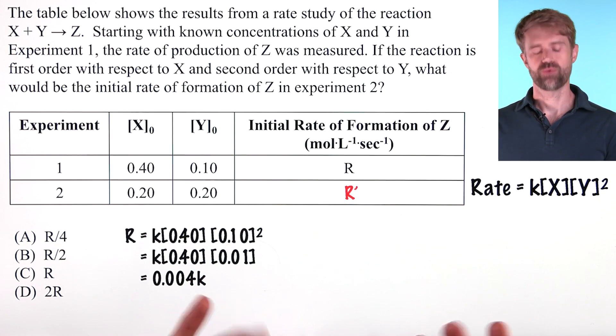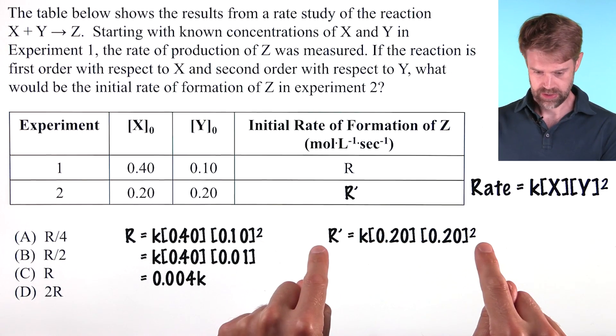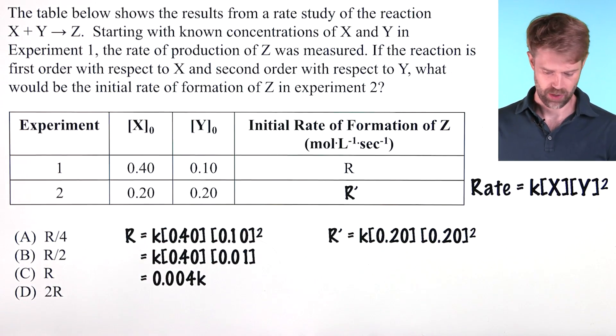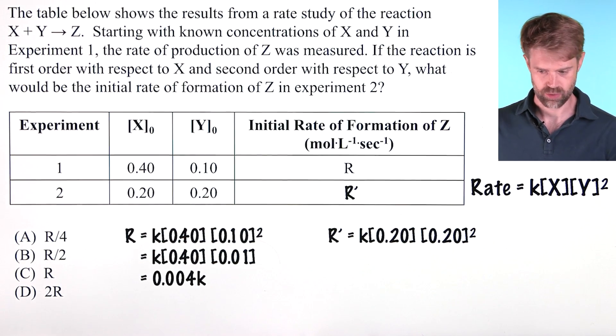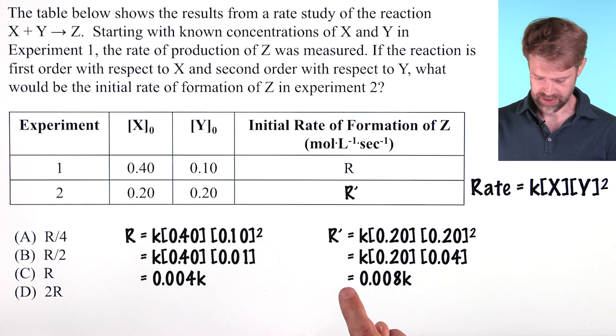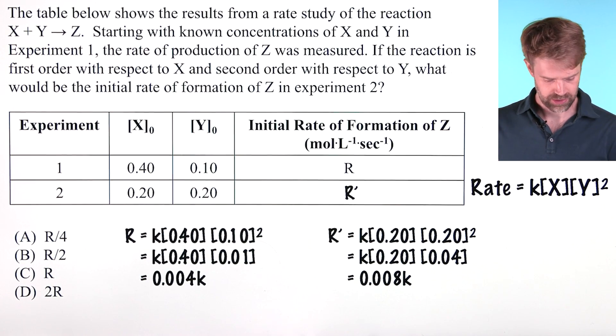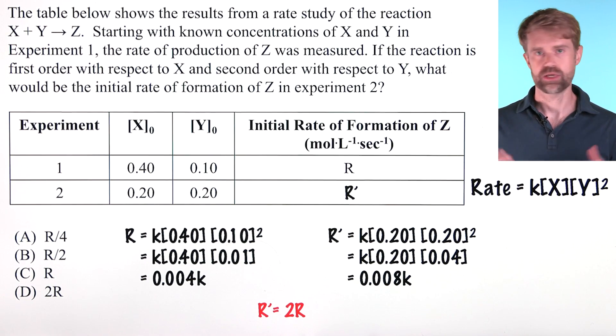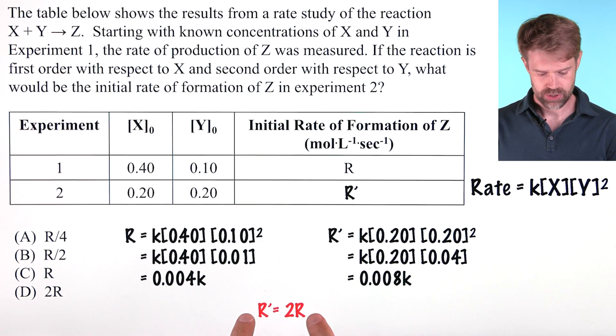Now we'll figure out the rate for experiment 2. We'll call that R prime and use the rate equation again. Now we'll just plug in the concentrations from experiment 2. So we have X 0.2, Y 0.2 squared because it's second order. Work through the math, square that 0.04, multiply this together, and we get 0.008K for R prime. Now we have solid numbers that we can compare. And you can see right away that R prime is clearly 2 times R, again corresponding to D.